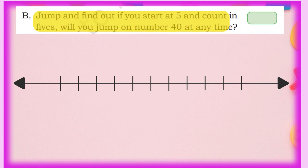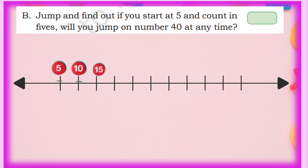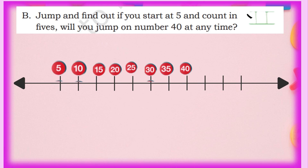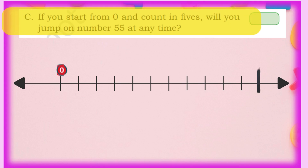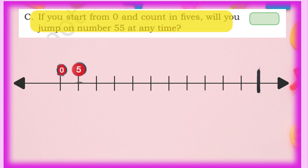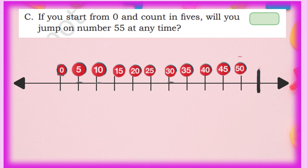Next: if you start at 5 and count in 5s, will you reach 40? Starting at 5: 10, 15, 20, 25, 30, 35, 40. Yes, 40 is reached. Next: if you start from 0 and count in 5s, will you jump on 55? Starting at 0: 5, 10, 15, 20, 25, 30, 35, 40, 45, 50, 55. Yes, we will surely land on 55. Both statements are correct.